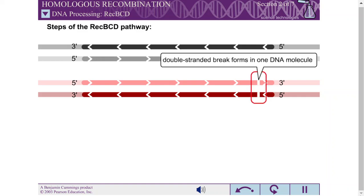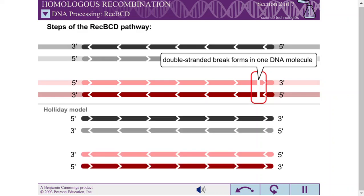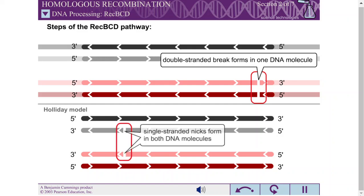In the REC-BCD pathway, homologous recombination is initiated by double-stranded breaks in a single DNA molecule, in contrast with the Holliday model, where recombination begins with single-stranded NICs at identical positions in each DNA duplex.